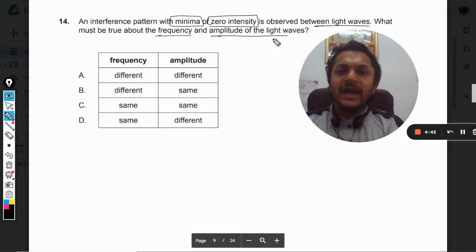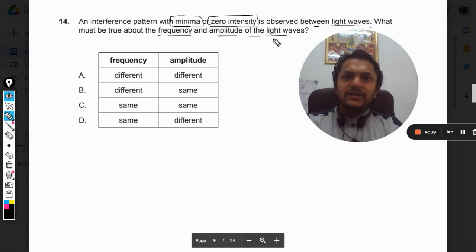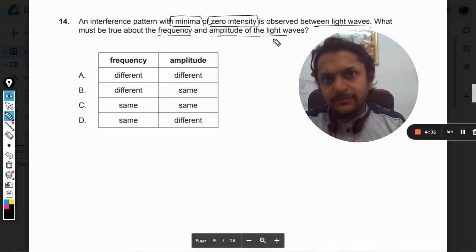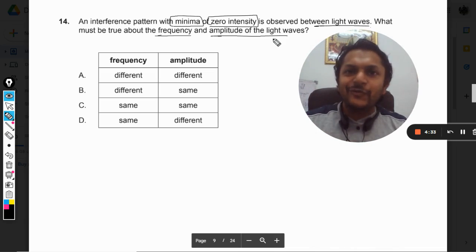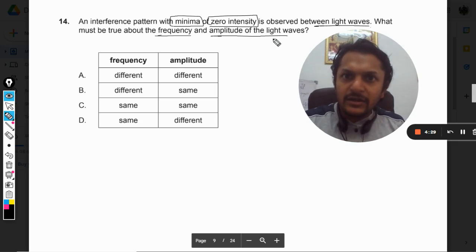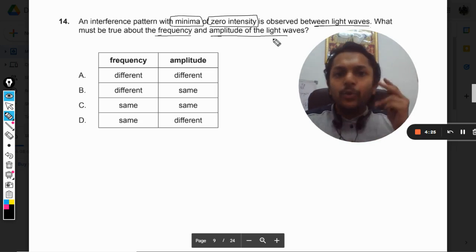Dear students, first of all, as per the topic of interference, I must tell you that there is a sine qua non condition that has to be satisfied by the light waves which are interfering to create interference. And what is that condition? Both of these lights should be coherent. They should have the same, exactly the same frequency.